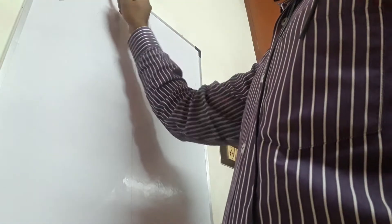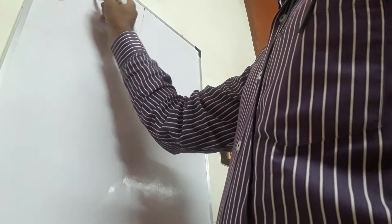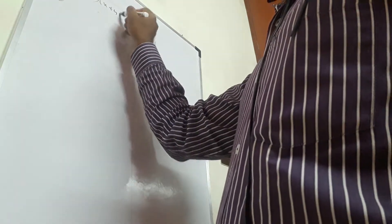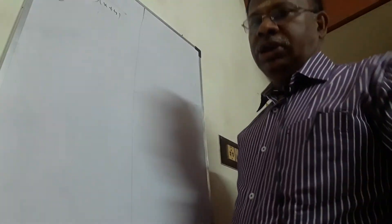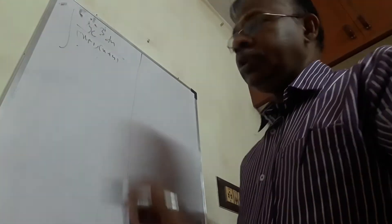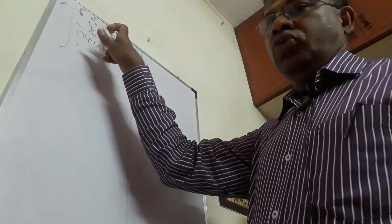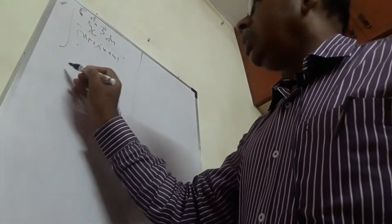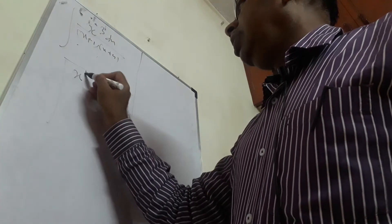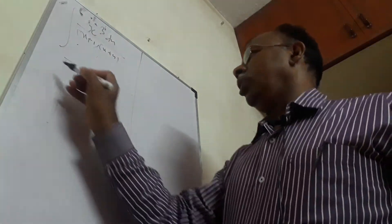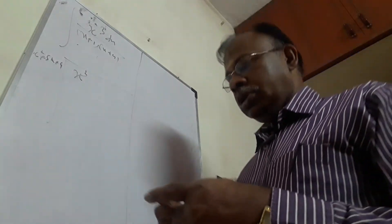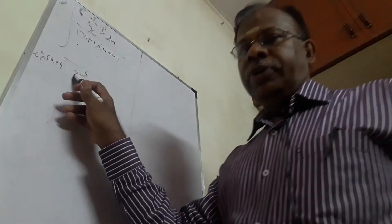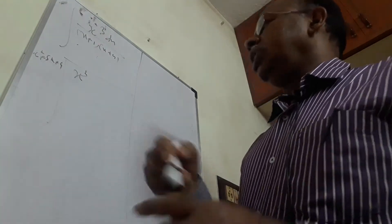Let me take another example: x cubed dx divided by (x+1)(x+4). Here my numerator is of greater degree. Multiplying the denominator gives x² + 5x + 4, since x + 4x = 5x and 4×1 = 4. Let me divide.